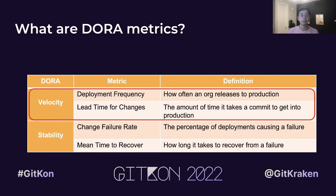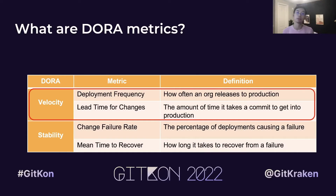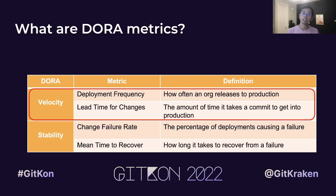Velocity is measured by deployment frequency and lead time for changes. Deployment frequency is the number of successful deployments to production — it shows how frequently and rapidly your team is releasing to end users. Lead time for changes is measured by how long it takes from commit to code running in production.